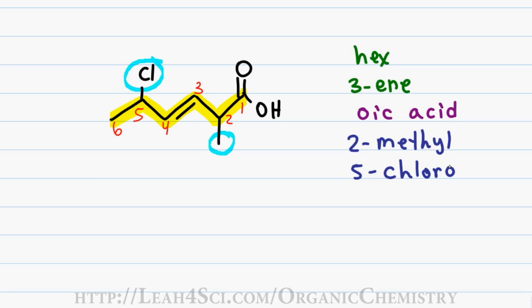Putting the name together, I start with my prefixes in alphabetical order followed by my first name, last name and suffix. Since I have a methyl and a chloro substituent, C comes before M, putting the chloro before the methyl. And since the suffix starts in a vowel, I drop the E in ene for a final name of 5-chloro-2-methyl-3-hexenoic acid.